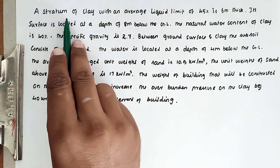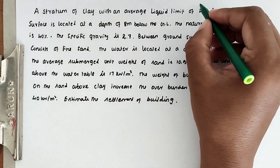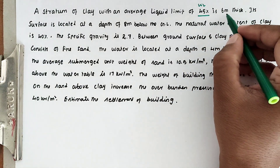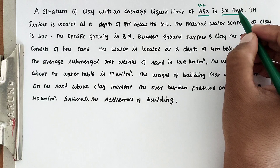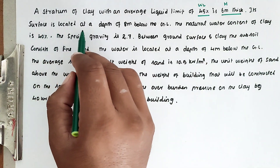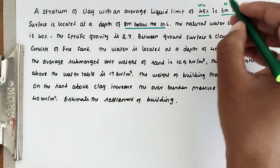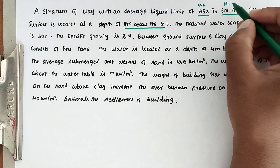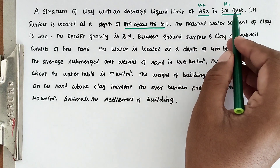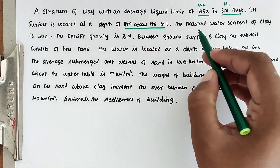The problem is: a stratum of clay with an average liquid limit WL of 45% is 6 meters thickness. So H is 6 meters. The clay layer has a 6 meter thickness and it will be 8 meters below the ground surface.